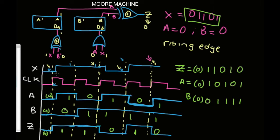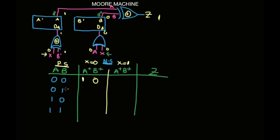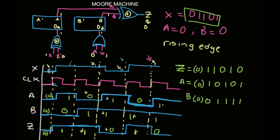That is the mistake I do not want you to make on an exam. In the Moore machine, you have to go back to your timing diagram and see what's happening between A and B. Now that we've gotten that out of the way, when A is 0 and B is 0, Z is 0 instead of 1 — so ignore that 1. It is okay to use the plug-and-chug method to find A plus and B plus for X equals 0 and X equals 1. But we only have data when X equals 0 in the timing diagram, so we cannot use it to completely fill up the state table.